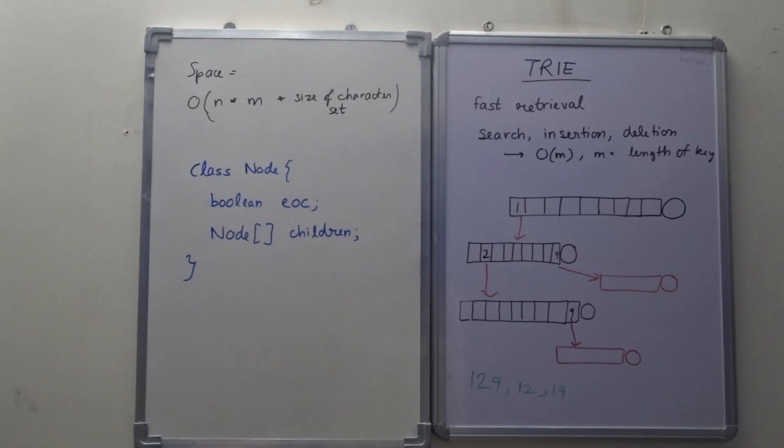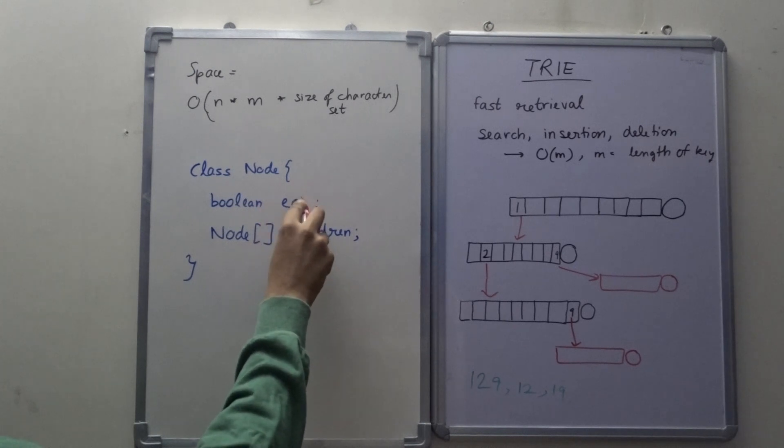So we construct a node which has two fields: one is a boolean, that is the end of word—sorry I have written EOC, it's EOW, end of word—and one is the array consisting of its children nodes.